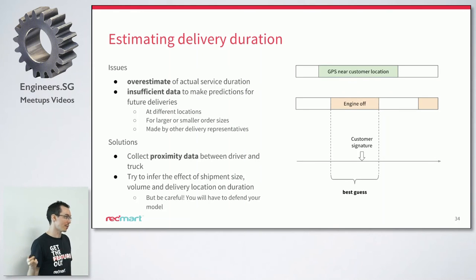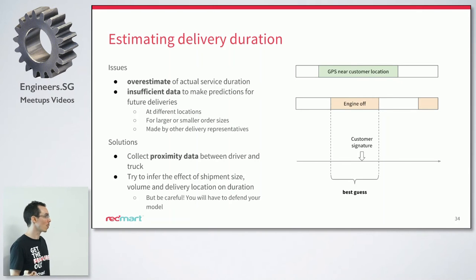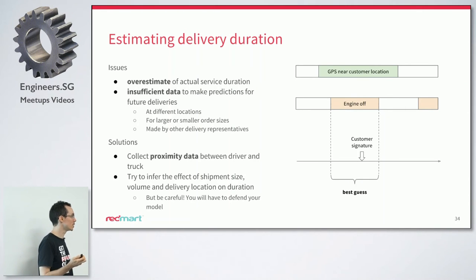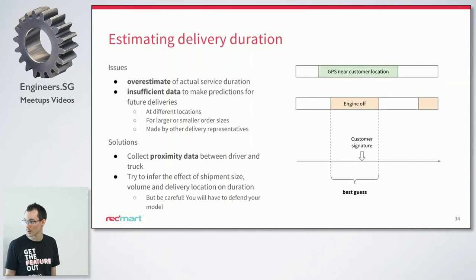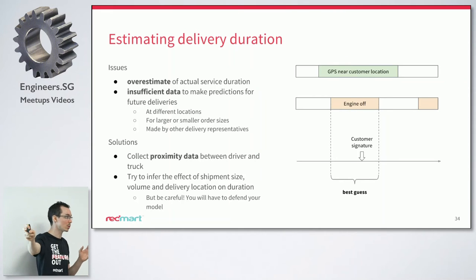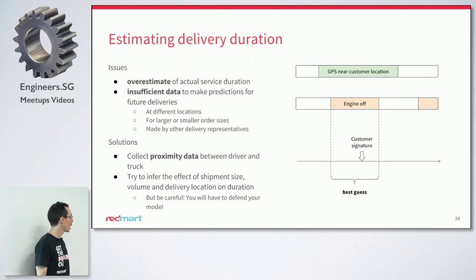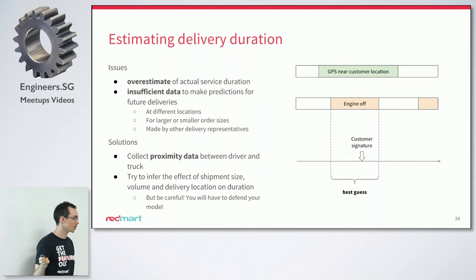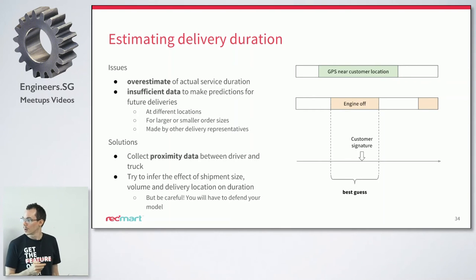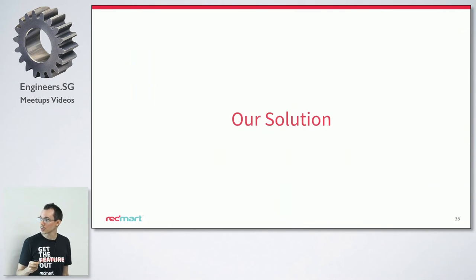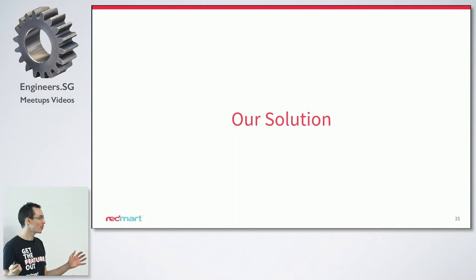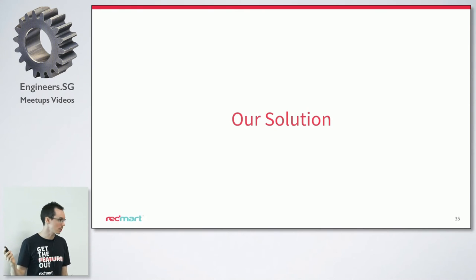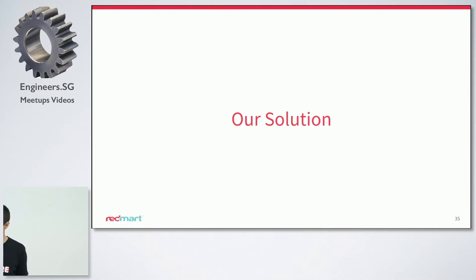Once we are facing this problem we can also look at what new data to collect to help solve it better in the future. We've started collecting data on the proximity between the driver and the truck, which gives us a better idea of how long deliveries actually take. There are many other problems embedded in the vehicle routing problem, and Vikash will now touch on some more of those problems and solutions.